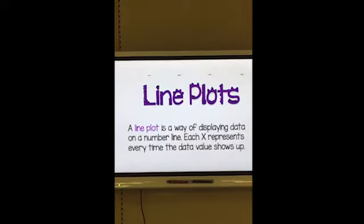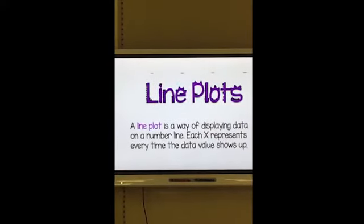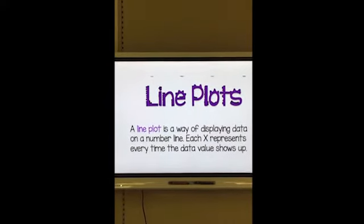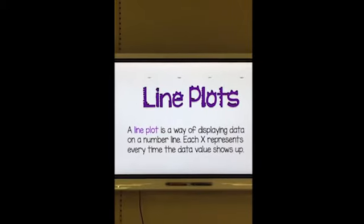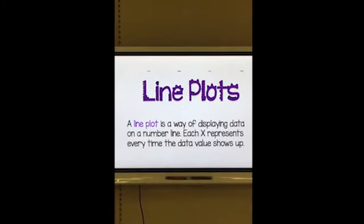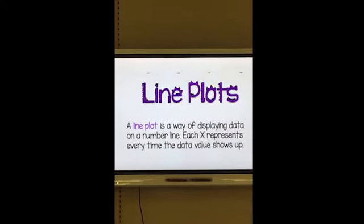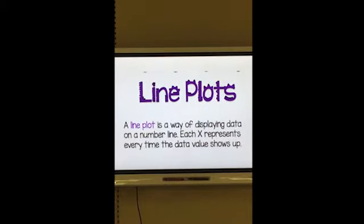A line plot is a way of displaying data on a number line. When we see these line plots, we're going to see some X's on them. Those X's represent every time that the data value shows up. We'll talk more about what that means here in just a minute.